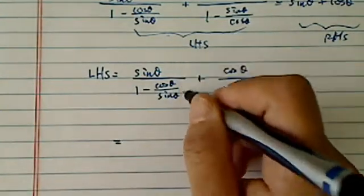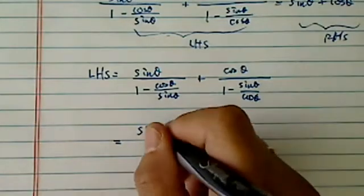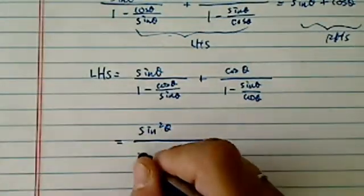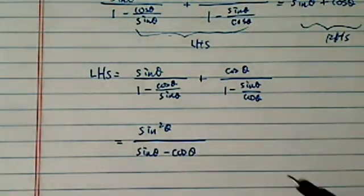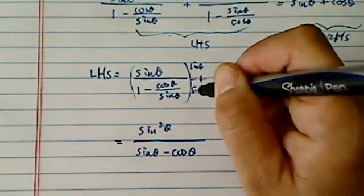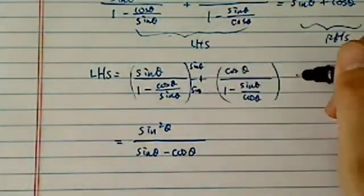So I'm going to multiply the top and the bottom by sine theta. So sine square theta is on the top. Okay, and then I have a sine theta minus cosine theta here. Once again, I just multiplied sine theta on top and the sine theta on the bottom. I'm going to do the same thing here.